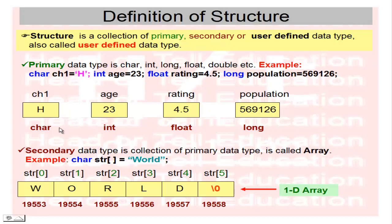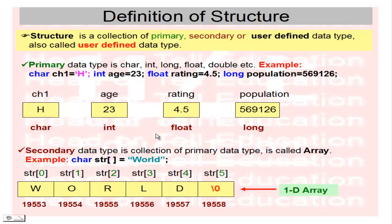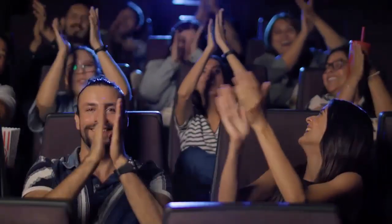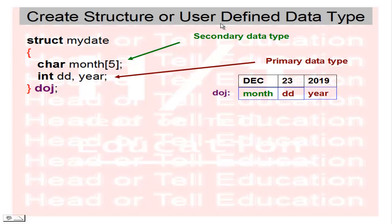Now what is the secondary data type? Secondary data type is a collection of primary data types, also called an array. For example, a character array string str assigned the value 'world' — world is a collection of characters. This is called a secondary data type. In an array, all variables are available in sequential order. We can also create an array of integers like age array, floating array, and long array.